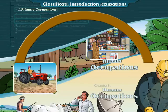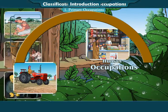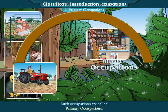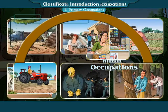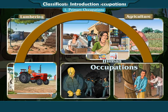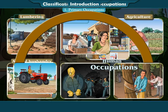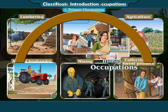Primary Occupations. Some occupations are directly related with nature. Man just collects and uses things that are available in nature. Such occupations are called primary occupations. Examples include: Lumbering, Fishery, Agriculture, Animal Husbandry, Mining, and Collection of Forest Produce, etc.